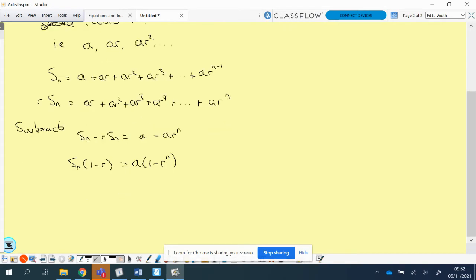So therefore, if I take a common factor out on both sides, so that's 1 minus R on the left-hand side, if I take S_n out. And again, if I take the A out, I'm left with 1 minus R to the power of n. Remember, we want to find the summation of this, so I'm just wanting to find S_n. So it's going to be A multiplied by 1 minus R to the power of n, divided by 1 minus R.